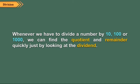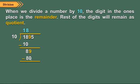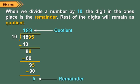Whenever we have to divide a number by 10, 100, or 1000, we can find the quotient and remainder quickly just by looking at the dividend. When we divide a number by 10, the digit in the 1's place is the remainder, and the rest of the digits will remain as the quotient. Let us divide 1895 by 10. The quotient is 189 and the remainder is 5.